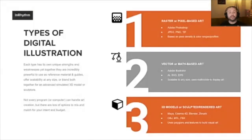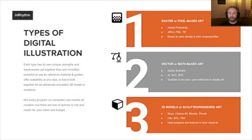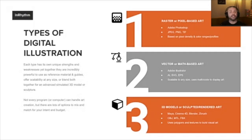Let's talk about the different types of digital illustration. First, raster or pixel-based art — that's pretty much anything Photoshop-related. A picture you take on your phone is a JPEG, PNG, or TIFF — all based on tiny squares called pixels. Each one of these has billions or trillions of potential color representations, and you're confined by how many squares you can fit on your page.